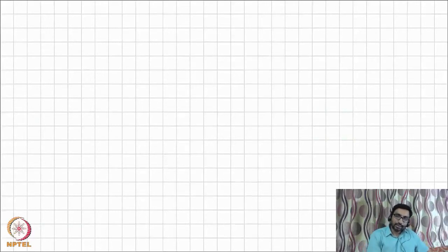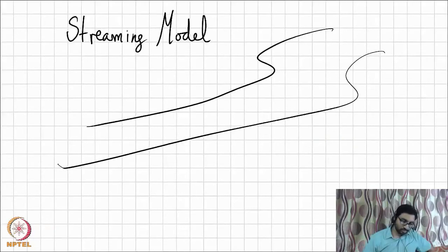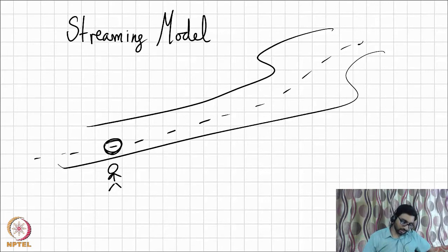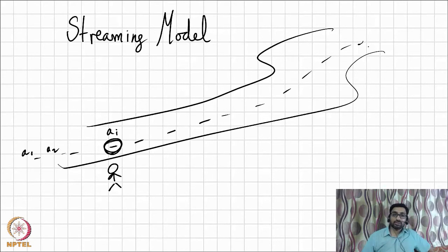Without further ado, let's get started. In the streaming model, data flows as a stream and you get to see data one item at a time. Let's give ourselves some notation: data items go from a_1 up to the current item a_i, and the data stream keeps coming in at every time step.